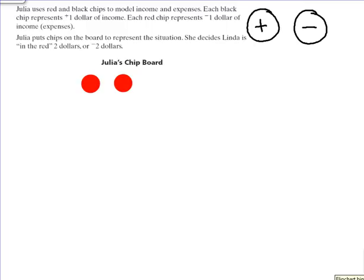And so now we can see that what we have left on the board are two red chips which represent two negatives, which tells us that the value of the chip board is negative two.